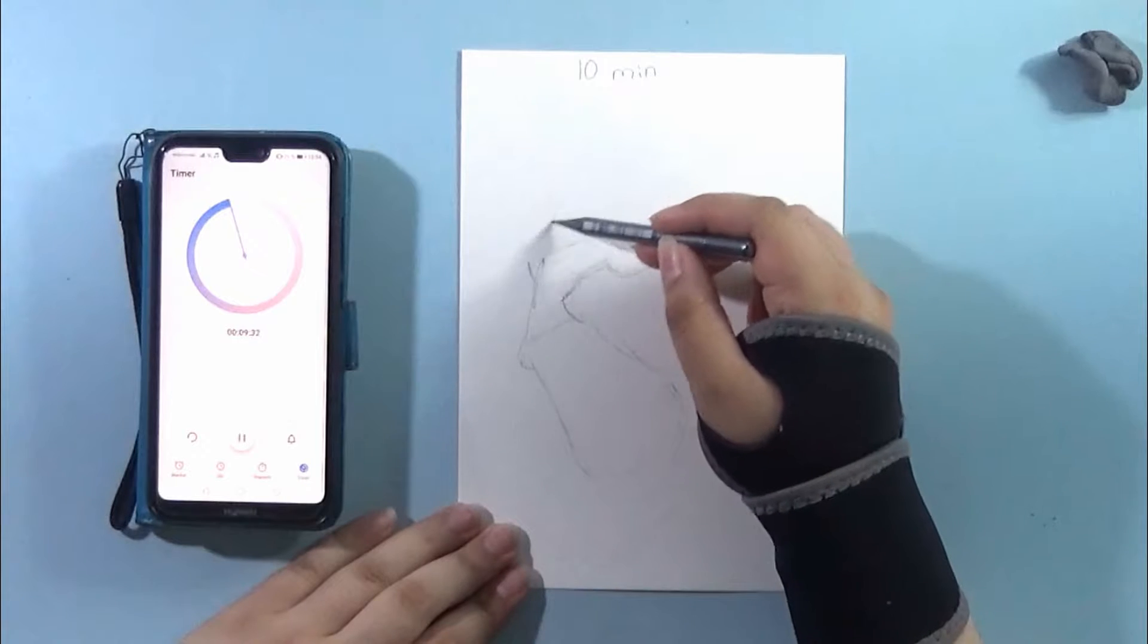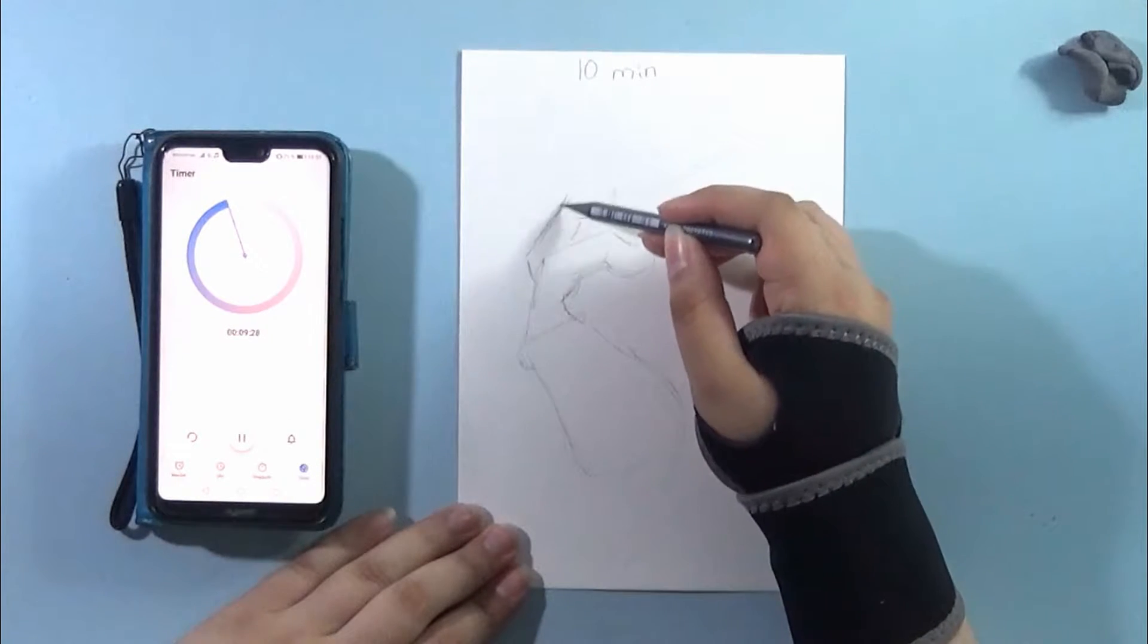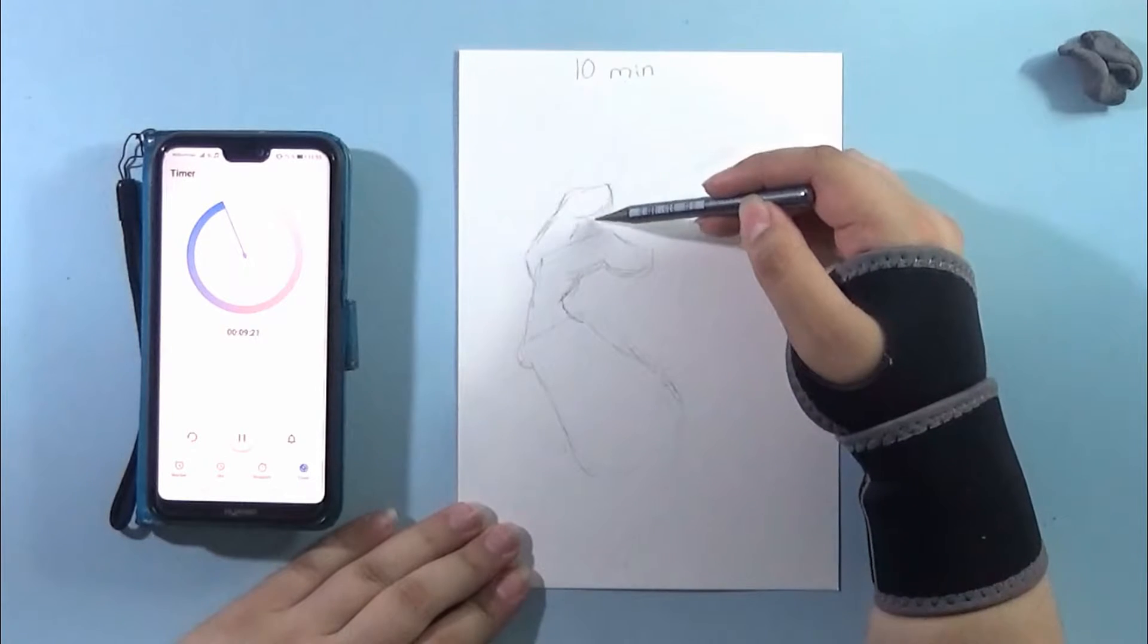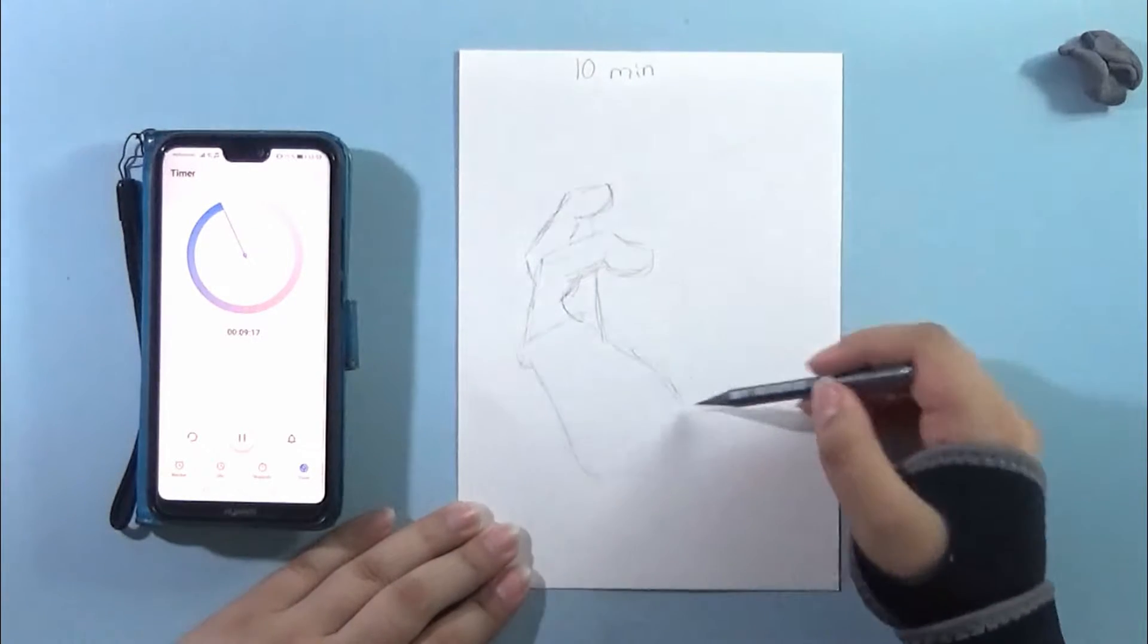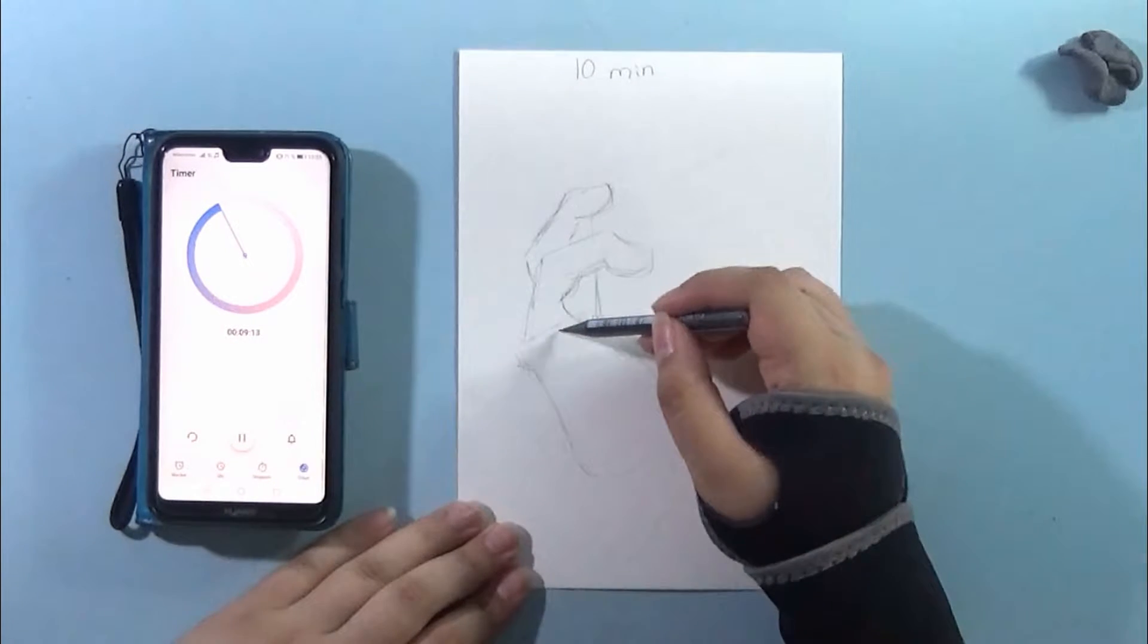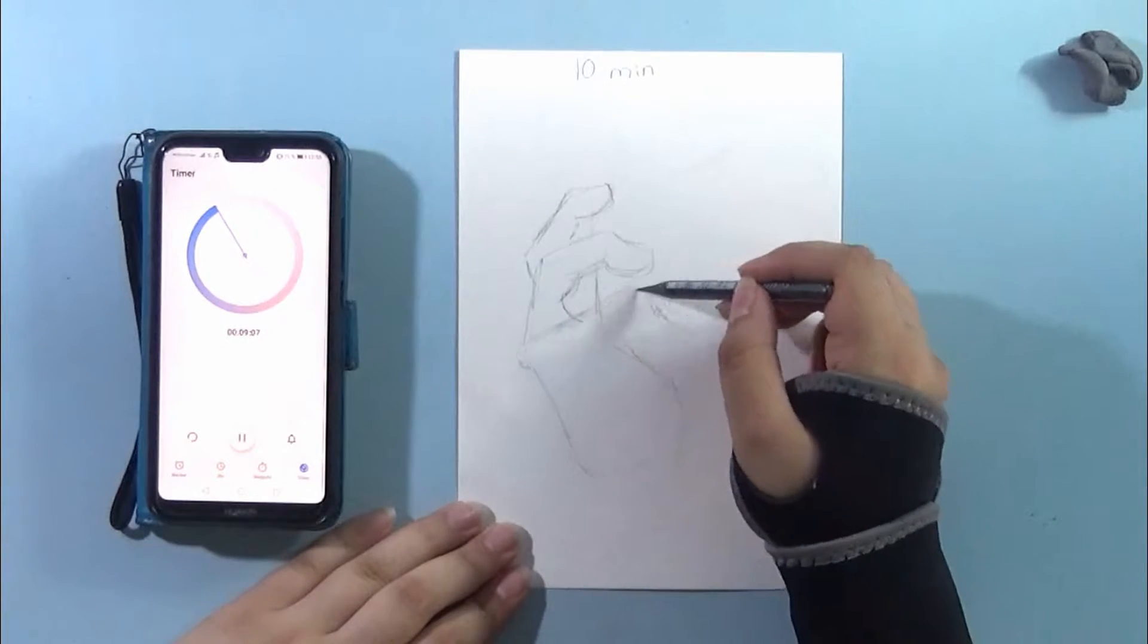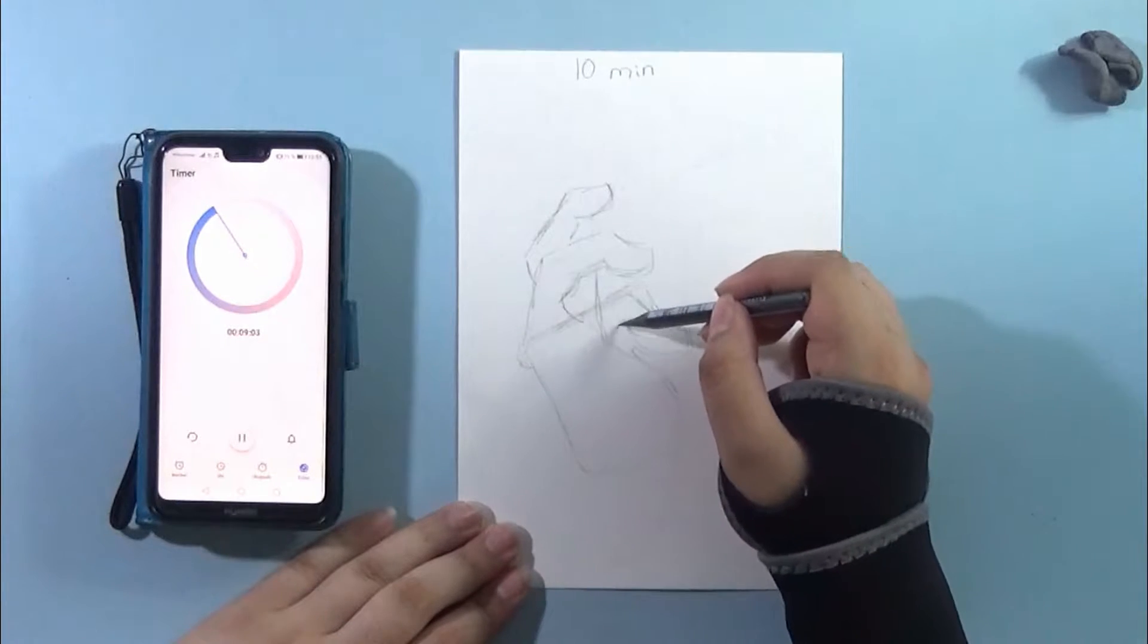But you know, I think just having the base shape down before you actually even think about really details and everything, it's just really helpful. Like knowing, okay, here goes one finger, this shape and everything is just way more easy.